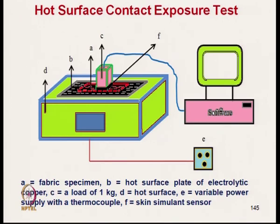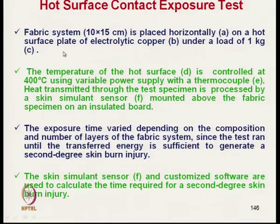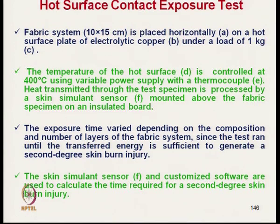The fabric specimen is rectangular, 10 cm by 15 cm in size, and is placed horizontally on the hot surface plate of electrolytic copper B under a load of 1 kg. The temperature of the hot surface is controlled at 400 degrees Celsius using a variable power supply with a thermocouple. This hot surface is supplied with controlled power to maintain 400 degrees Celsius.